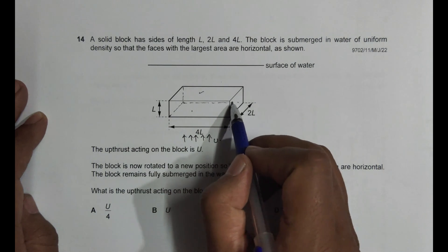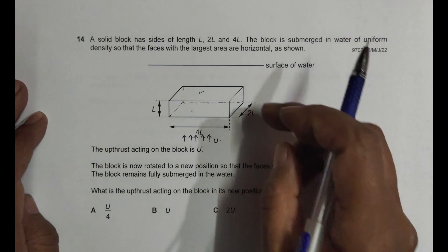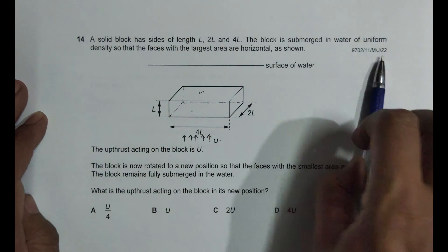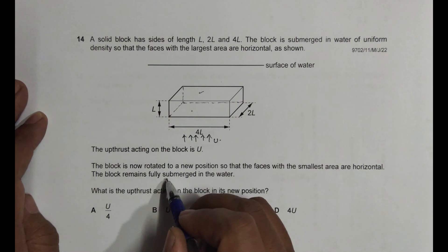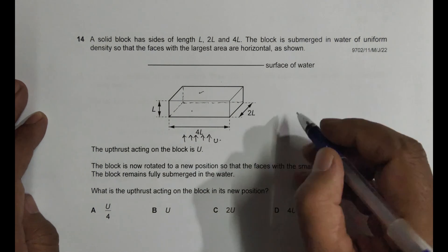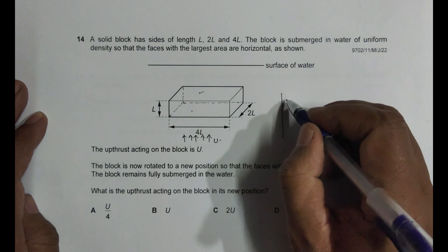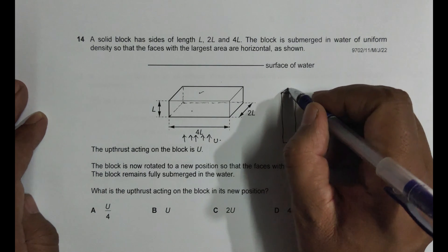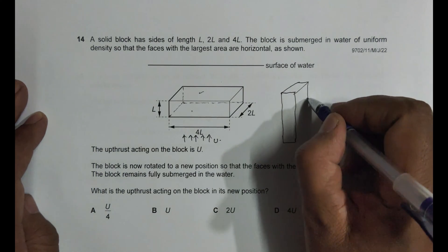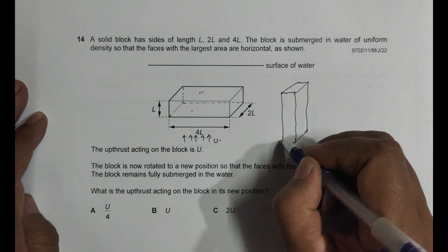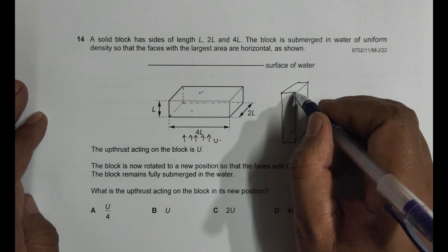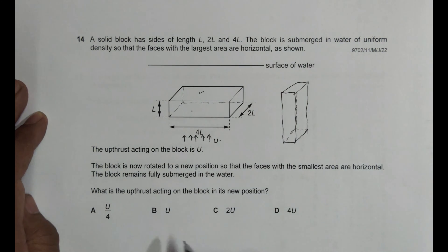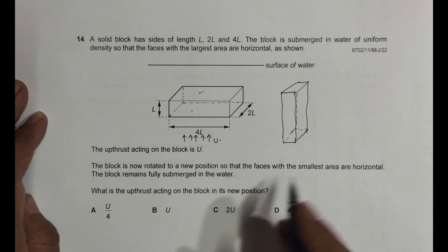We have to place it in such a way that this side is like this, so the whole thing will be twisted like this. Even if I place it like this, it is still submerged. So what is the upthrust acting on the block in its new position?